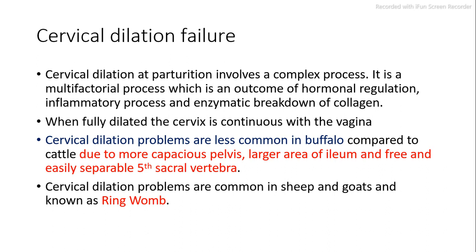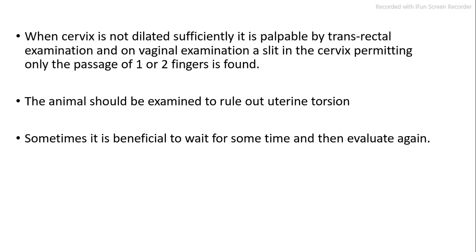Cervical dilation failure at parturition involves a complex, multifactorial process involving hormonal regulation, inflammatory process, and enzymatic breakdown of collagen. When fully dilated, the cervix is continuous with the vagina. Cervical dilation problems are less common in buffalo compared to cattle due to a more capacious pelvis, larger area of ileum, and freely separable 5th sacral vertebra. In sheep and goats it is known as ring womb. When the cervix is not dilated sufficiently, it is palpable by transrectal examination, and on vaginal examination only one or two fingers can pass through the cervical slit.